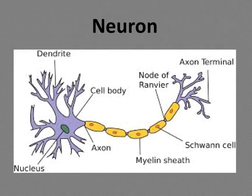Neurons communicate by means of nerve impulses called action potentials — brief electrical signals that travel down the axon. Messages travel faster along axons that are covered in a fatty tissue called the myelin sheath. The junction between two neurons is called the synapse, where the two neurons almost connect, but not quite.